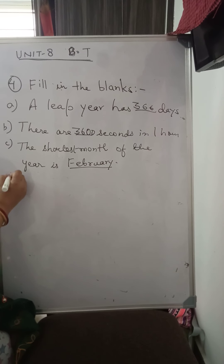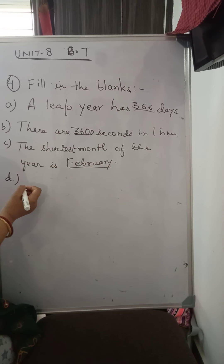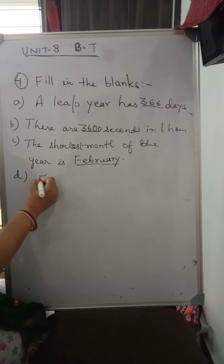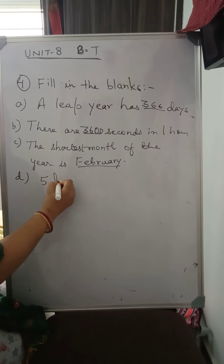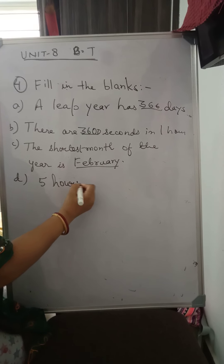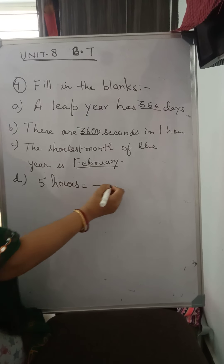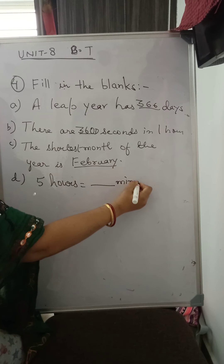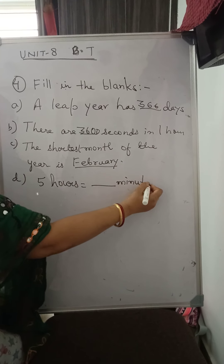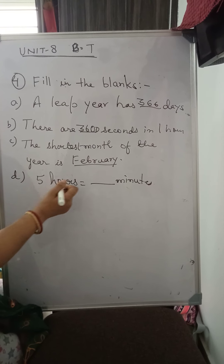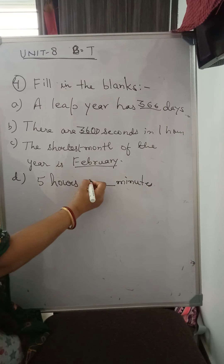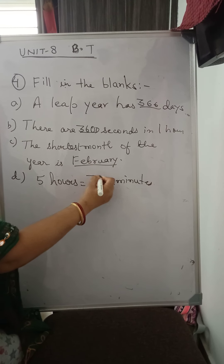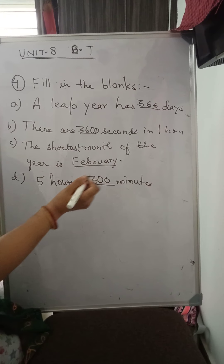Now C: The shortest month of the year is February. Now D: Five hours equals dash minutes. One hour is equal to sixty minutes, so sixty into five is three hundred minutes.